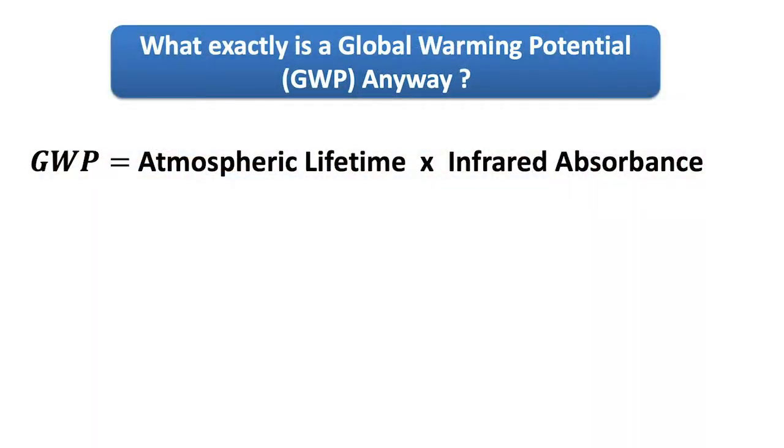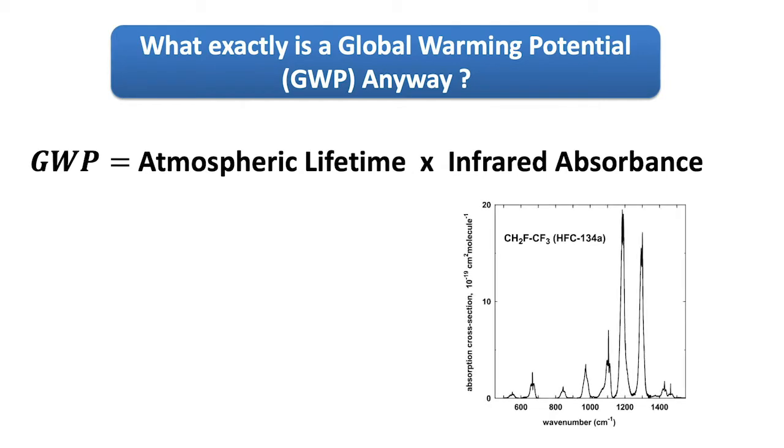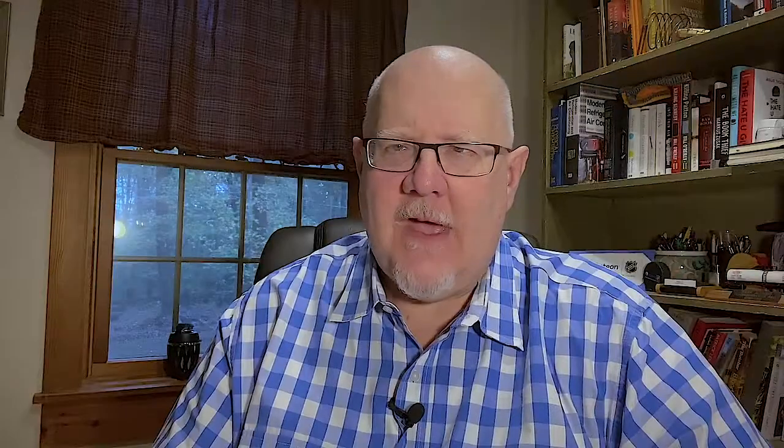Looking at how those GWP numbers are calculated, they use pretty sophisticated atmospheric modeling these days. There are really two factors that determine the GWP value. One is its infrared absorption cross section — a measure of how effective a molecule is at trapping heat, which depends on the atoms and chemical bonds in the molecule. For most refrigerants we've been using over the past several decades, those don't vary a lot. But the other part of the equation is the atmospheric lifetime, which can vary quite a bit — from very short to quite long — and that really determines whether your GWP is high, somewhere in the middle, or very low.